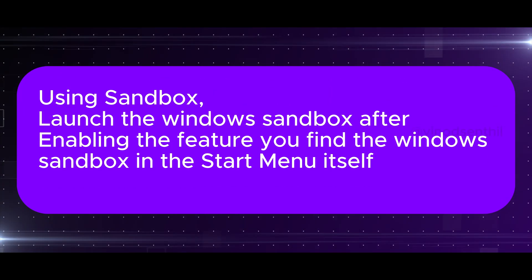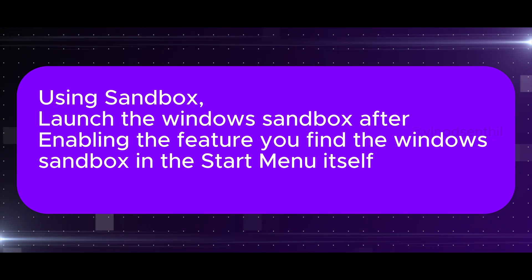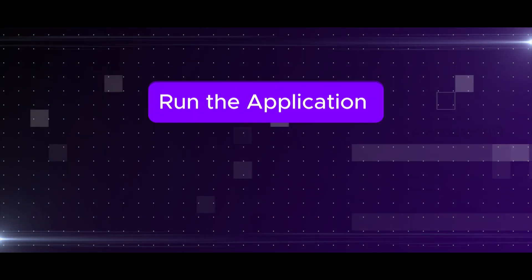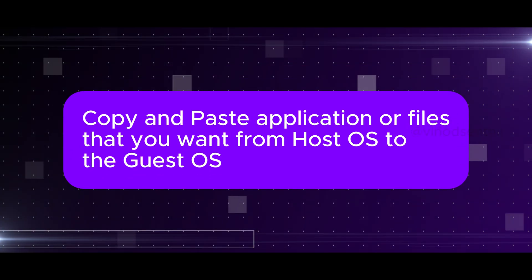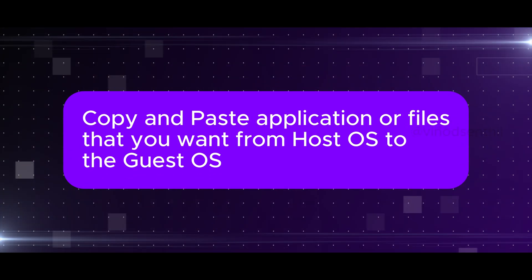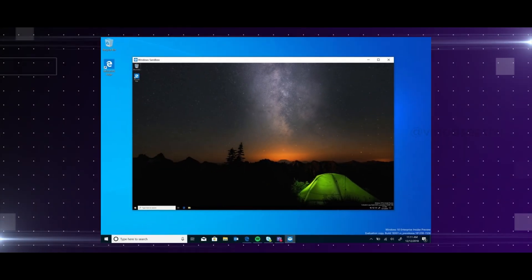Once you're done enabling sandbox, launch the Windows sandbox — you can find it in the Start menu itself. Run the application and copy and paste applications or files that you want from your host OS to the guest OS, which is another version of Windows loaded through the sandbox. You don't need to go through the process of loading an ISO file of Windows and installing it. It's very simple — just have sandbox on and you will have an environment up and running.